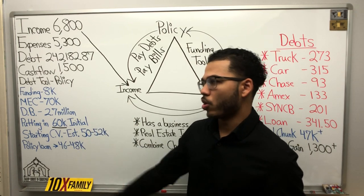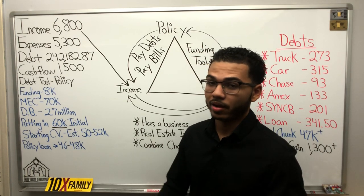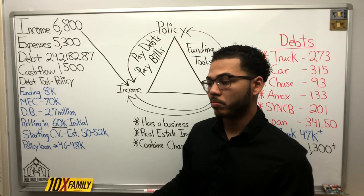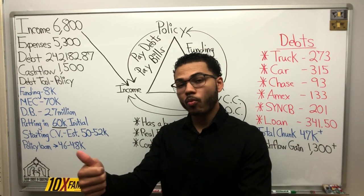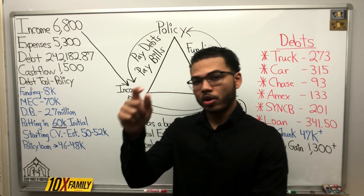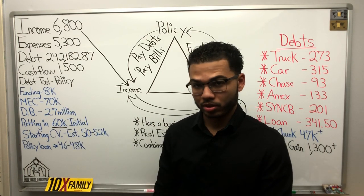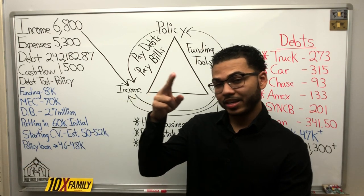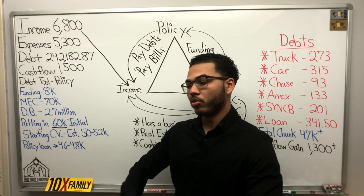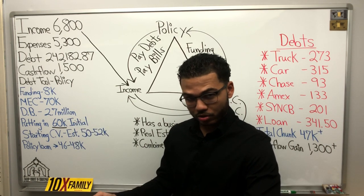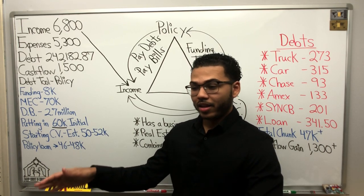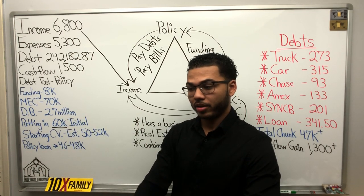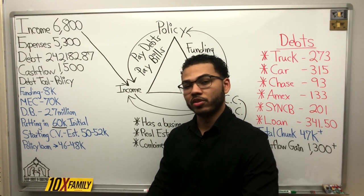I get a lot of viewers in their late 50s and 60s asking if this can work for them. Number one: if you have a spouse who is healthier or younger than you, we can potentially put the policy on the spouse. If both of you are in poor health, the third suggestion would be obtaining an insurance policy on your children — if they're over 21 it's easier; if they're minors there are more restrictions.